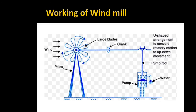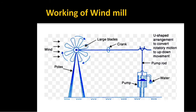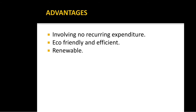The largest wind farm in India produces 400 megawatts of electricity and is located near Kanyakumari in Tamil Nadu. That is the largest wind farm. Now let us know about the advantages and disadvantages of wind energy.